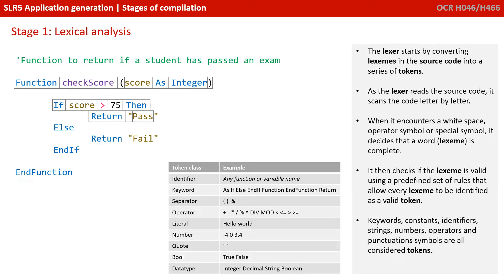The first stage is lexical analysis. The lexer starts by converting lexemes in the source code into a series of tokens. We can see the original source code here for a very simple function on the left. As the lexer reads the source code, it literally scans the code letter by letter. When it encounters a white space, an operator symbol or a special symbol, it decides that a word — or in this case a lexeme — is complete. It then checks if the lexeme is valid using a predefined set of rules that allow every lexeme to be identified as a valid token.